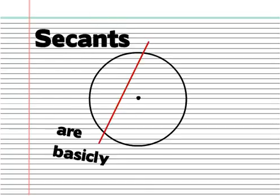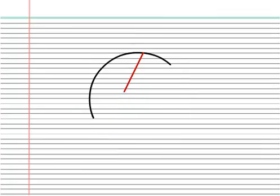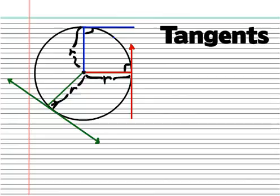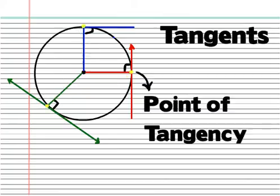Secants are basically chords and have little importance. Tangents are lines, rays, or line segments that are perpendicular to the radius drawn towards the point of intersection, called the point of tangency.